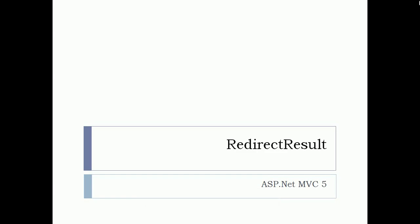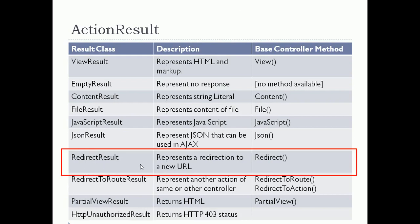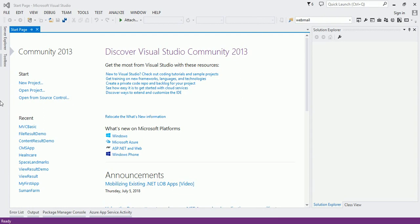Hello everyone, welcome back. Let us continue with Action Result. Today we are going to see what is a Redirect Result. In the last session we saw File Result, and now today we are going to see Redirect Result. It is one of the types of Action Result that your action method can return.